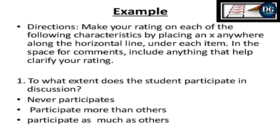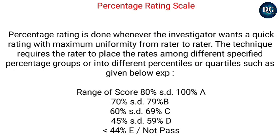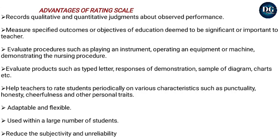The fourth type is the Percentage Rating Scale, used when the investigator wants quick rating with maximum uniformity from rater to rater. The rater places ratees into specified percentage groups or percentiles. For example: scores 80–100 = category A, 70–79 = B, 60–69 = C, 45–59 = D, below 45 = E.